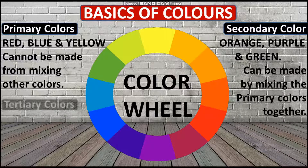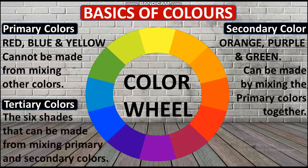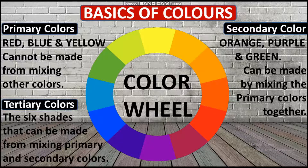Next are tertiary colors, which are the remaining colors in the color wheel. There are three primary colors, three secondary colors, and twelve colors total in the color wheel — so that means six colors are tertiary colors.